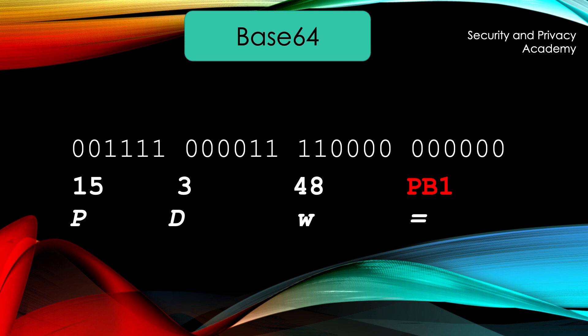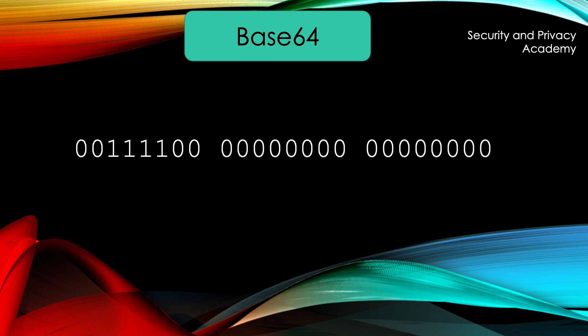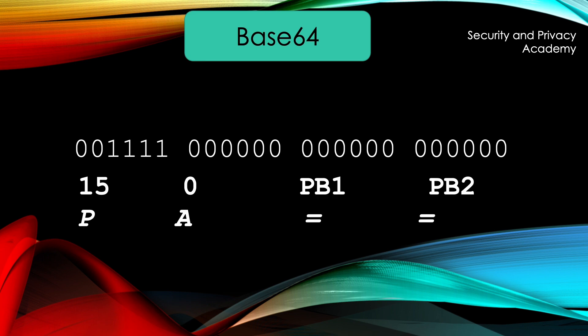Let's look at one more example to see the difference. If we have only 1 byte, we need 2 padding bytes. After converting it to 6-bit words, we can see that there are only 0s from the second 6-bit word on. But the first 0 6-bit word doesn't come exclusively from the padding byte, so this is transformed to an A. Whereas the other 2 are coming from the padding bytes, so they are transformed to padding bytes 1 and 2, telling the encoder to map them to equal signs.